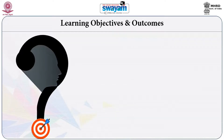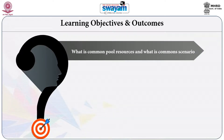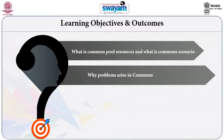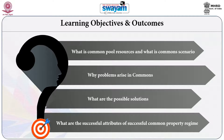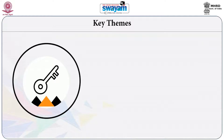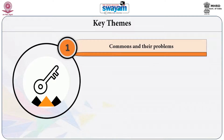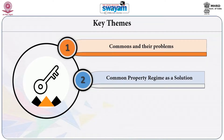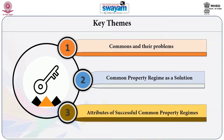Some basic questions we will discuss are: what are common pool resources and what is common scenario? Why do problems arise in commons? What are the possible solutions? What are the successful attributes of common property regimes? We will focus on three topics: first, a conceptual clarification of common scenario; second, problems that emerge in common scenario; and third, what may be considered successful characteristics of a common property regime.